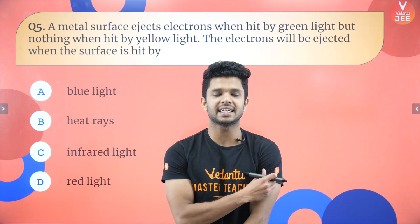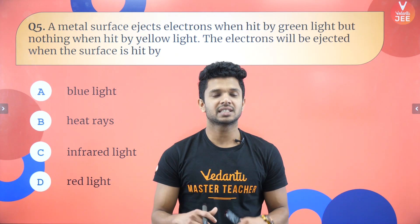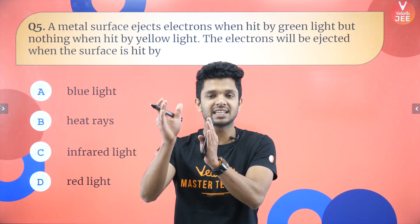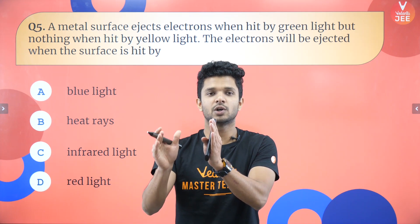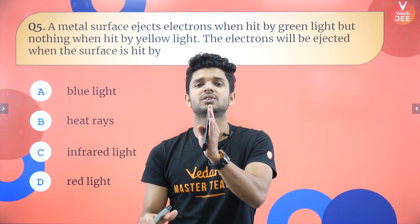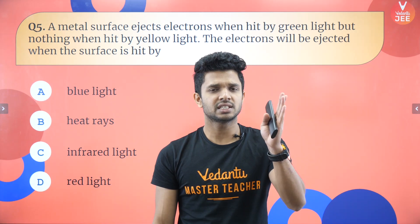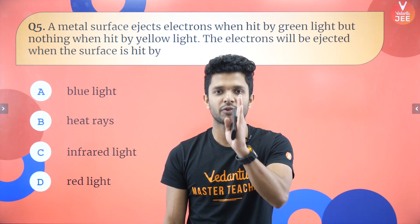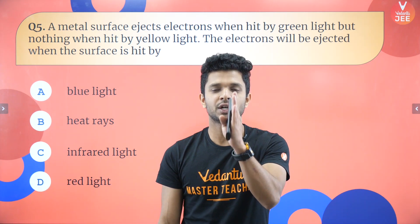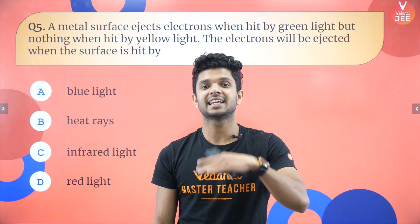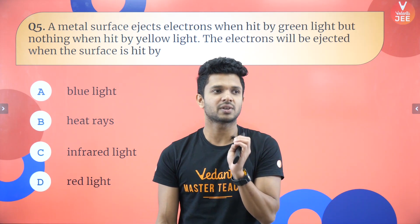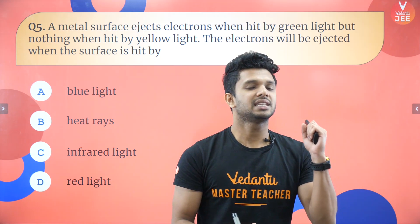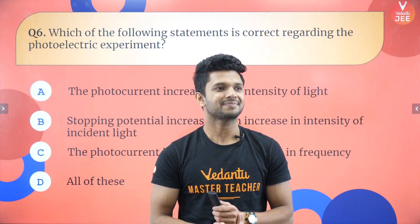Question five: a metal surface ejects electrons when hit by green light but not by yellow light. Green light has greater energy than yellow because yellow has a longer wavelength and lower frequency. So electrons are ejected by any EM wave with energy greater than green — including blue, indigo, and violet. Infrared (heat rays) and red light have lesser energy, so photoelectric effect is not possible with them.